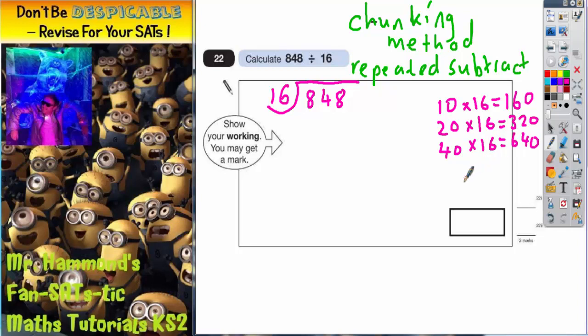OK, so we could use any of those chunks. Now let's begin. So what chunk of 16 shall I subtract first? Well, I could subtract 10 chunks, I could subtract 20 chunks, I could subtract 40 chunks, because all of these numbers are less than 848, so I could subtract any of these. Now the bigger the amount of chunks you subtract, the quicker you're going to get to your final answer. So I should really be starting by subtracting 40 lots of 640.